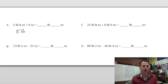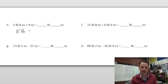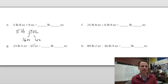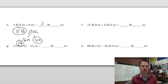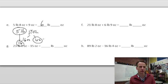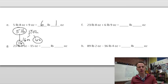Adding the ounces: eight plus nine is 17 ounces. We decompose 17 into 16 ounces (one pound) and one ounce. So five pounds plus that extra pound gives us six pounds, with one ounce remaining — six pounds one ounce.